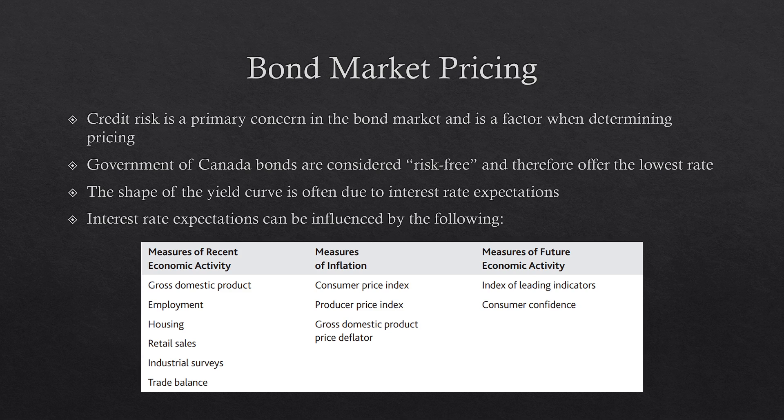Interest rate expectations can be influenced by various things including recent economic activity like GDP, employment, housing, retail sales, industrial surveys, and trade balance. Measures of inflation are a key factor — if inflation is coming in quite high, interest rates tend to go up. Measures of future economic activity also influence interest rate expectations, such as the index of leading indicators and consumer confidence.